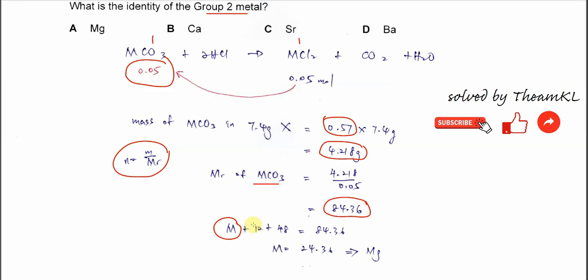Plus the carbon, 12, plus 48 for the 3 oxygens. So it equals the molar mass we calculated just now. Rearranging, you get the mass of the Group 2 metal is 24.36, which is magnesium.